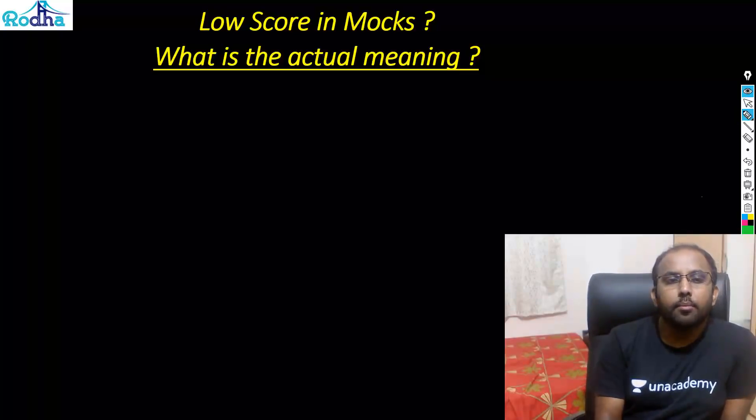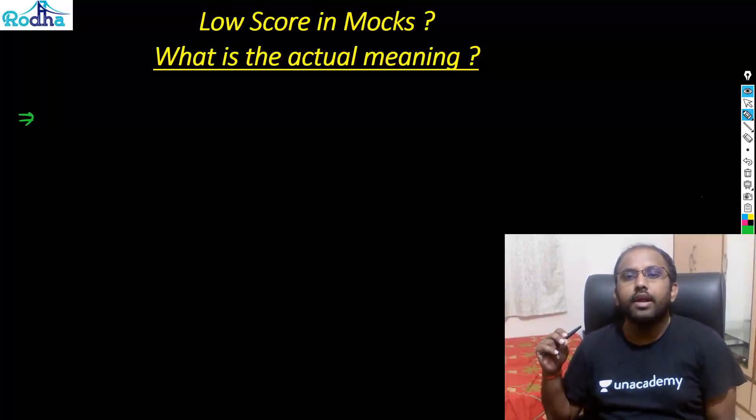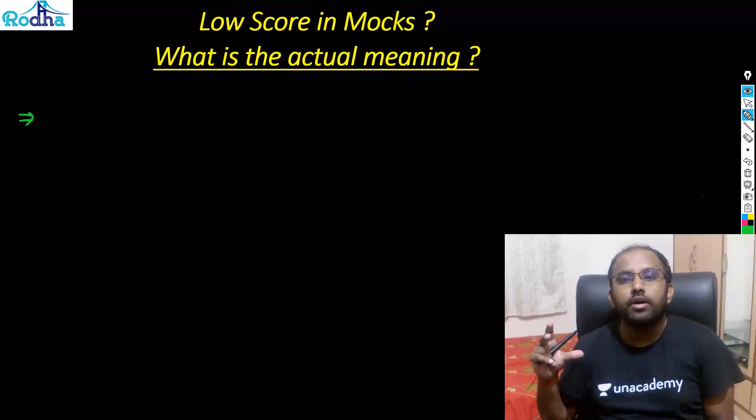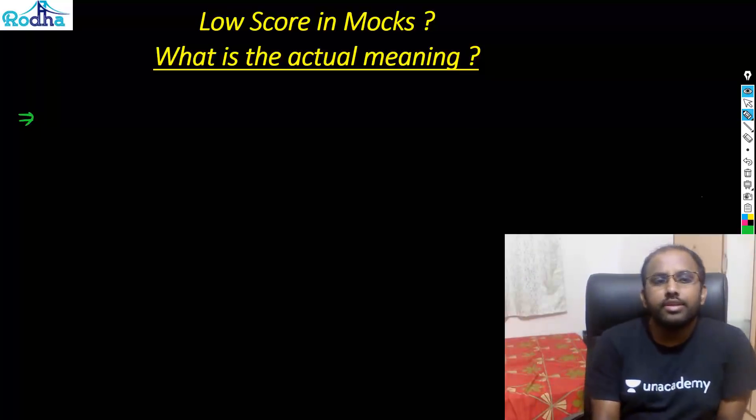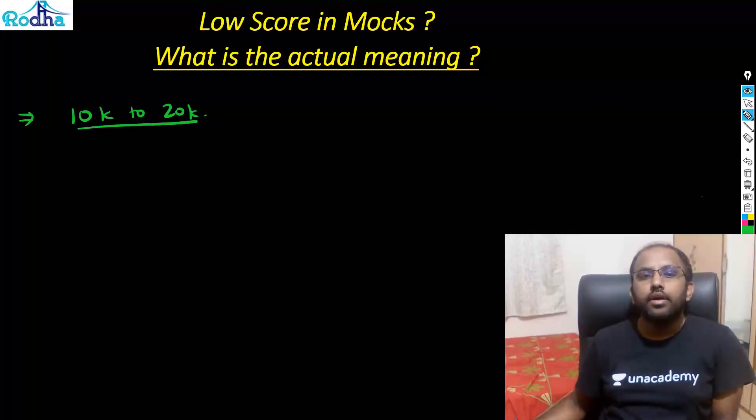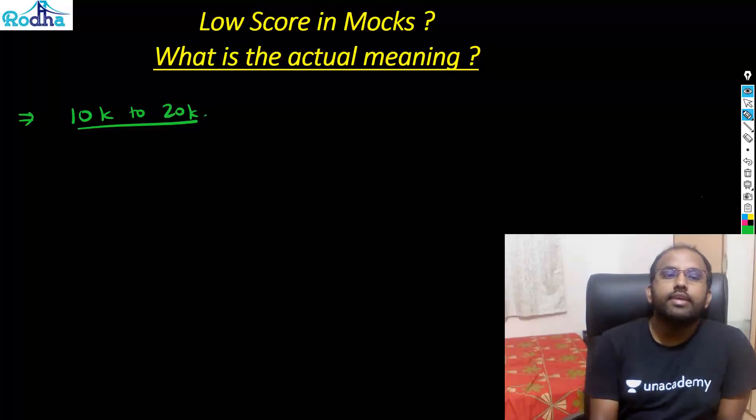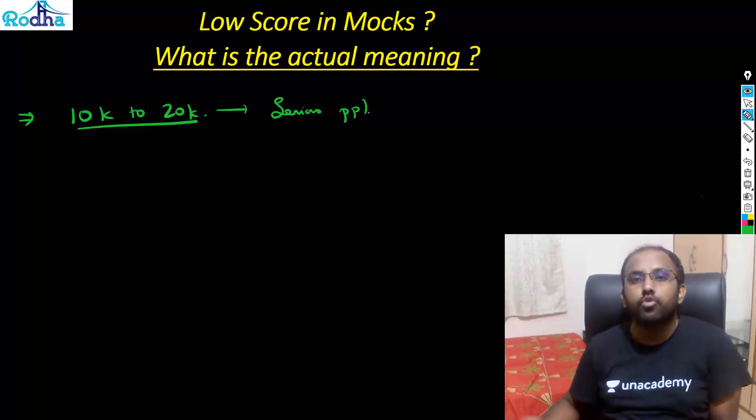Because now let's say for example if you must have given some last 2-3 mocks, you must have seen that what are the number of people giving those national level mocks. And you know that there are only 2-3 good mocks nationally which is attended by most of the people. You see that the number is always varying between 10,000 to 20,000. So 10k to 20k people attempt those mocks in the last 1 to 1.5 months to CAT. These are the serious people who have not given up till now and they want to succeed.